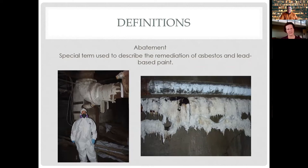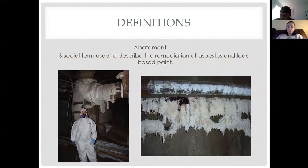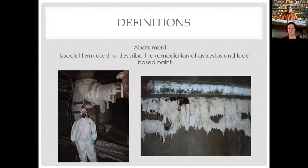Abatement is a term you may come across in real estate — it's a special term used for remediation of asbestos and lead-based paint, materials that are in your building rather than the environment. Abatement means taking the lead paint or asbestos either out of the building, or encapsulating it and leaving it there. For example, if you have 300 windows with lead paint on the windowsills, removing it is extremely cost prohibitive, so you can paint over it with non-lead-based paint — that's considered abatement.